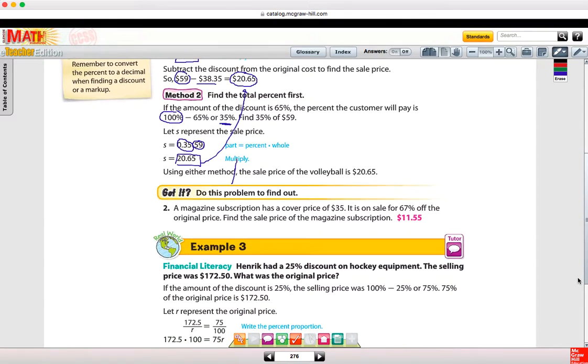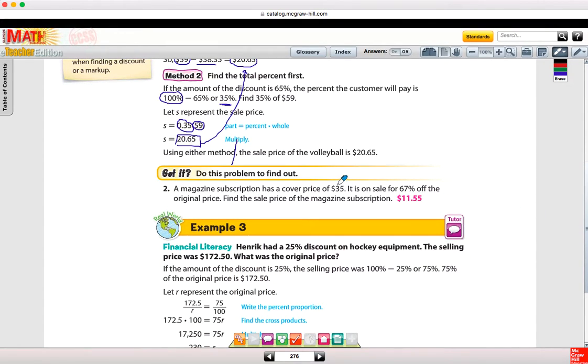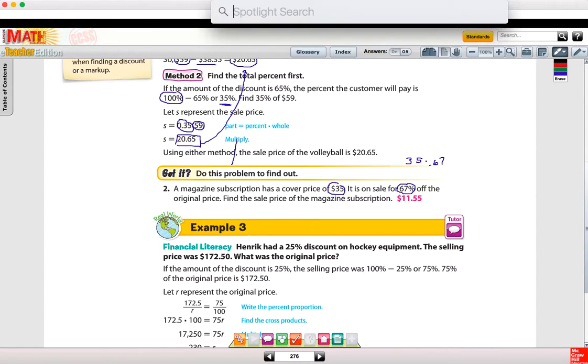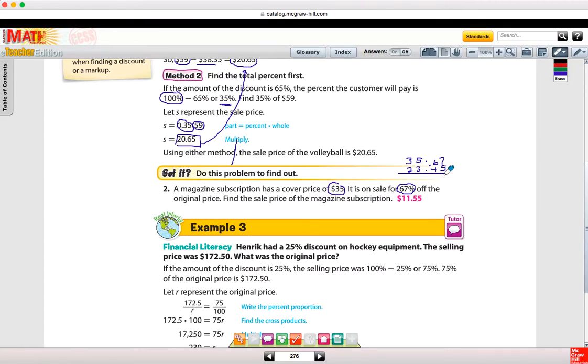So a little bit different. Let's take a look at the example here. I'll do it both ways. A magazine subscription is $35, and it's on sale for 67% off. So I could take $35 times 0.67, and that is 35 times 0.67, $23.45. So $23.45 is not the price. We have to subtract that from the original price, which is $12.22.